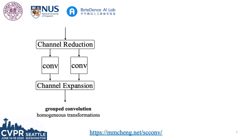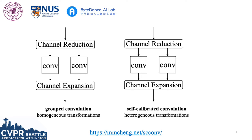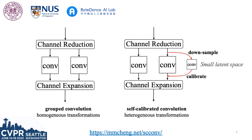Different from group convolutions which separate the convolutional filters into multiple identical portions, self-calibrated convolutions treat these portions unevenly. One portion is firstly transformed to low-dimensional embeddings through downsampling, and then adopted to calibrate the convolutional transformations of another portion.